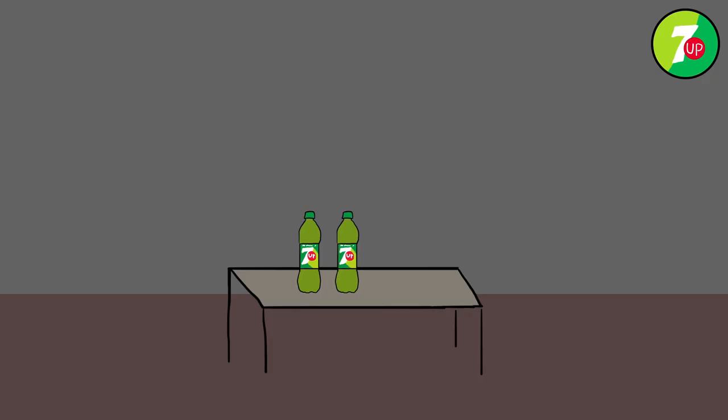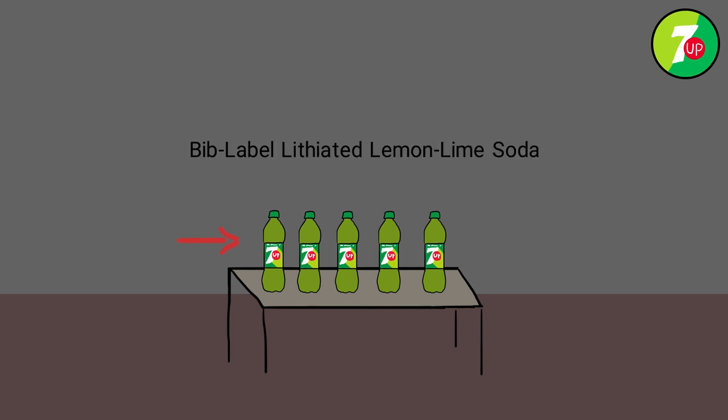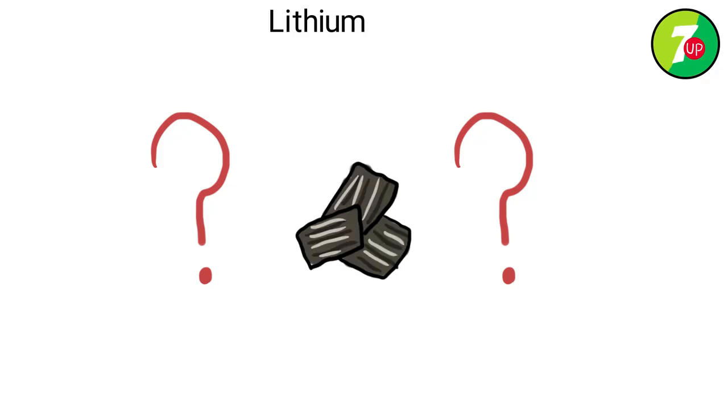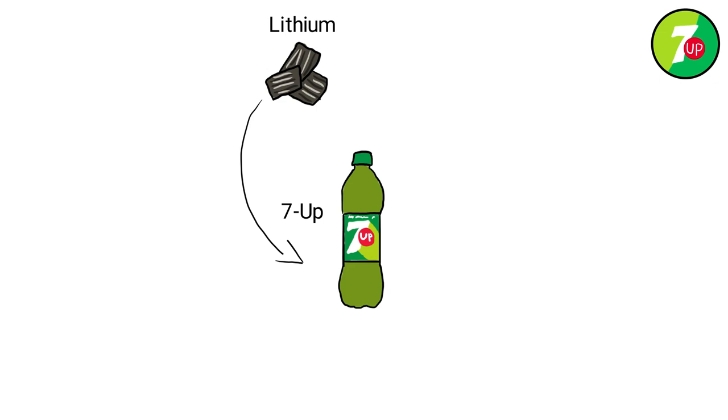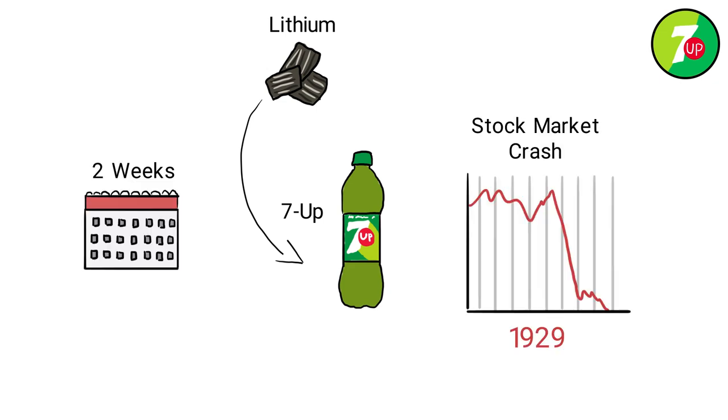Wait, what? Yeah, the drink was initially sold as Bibb-label lithiated lemon-lime soda when it was launched in 1929, and until 1950 the drink contained the drug. It's unclear why lithium was one of the original recipes for 7-Up, but considering the drink launched two weeks before the huge stock market crash in 1929 that decimated the American economy,